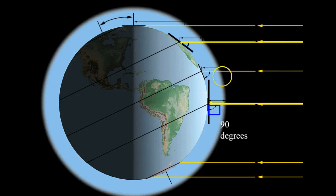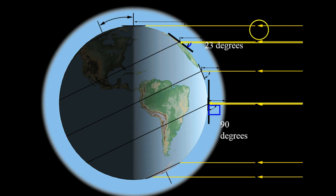Similarly, if you look at the equator and at 23.5 degrees north, you can see that it is getting an angle of 23 degrees. So as we go up in latitude, our angle decreases when it's tilted this way.